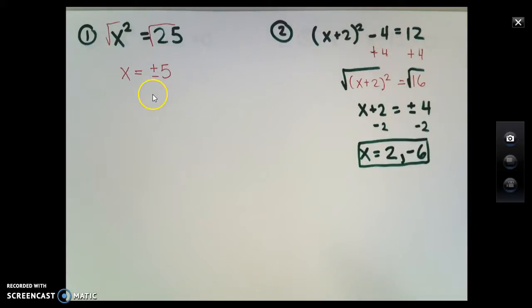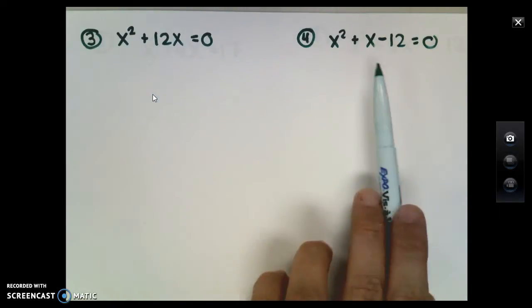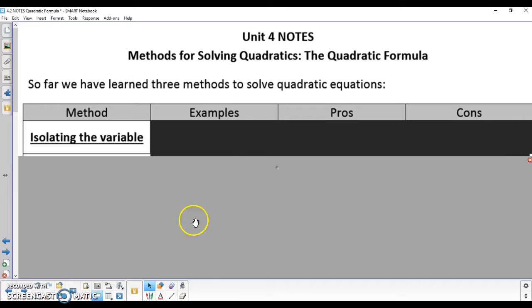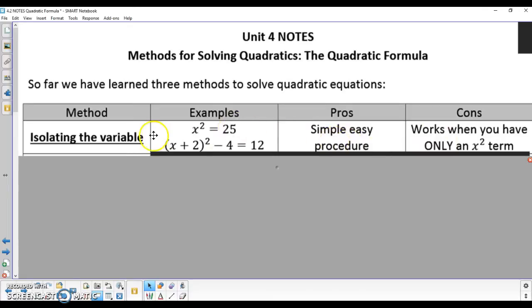The problem is that solving with square roots is not going to work when you have an x squared term and an x term in the problem, as we see here with number 3 and number 4. While this method is very useful and simple, it's only going to work when you have an x squared term.